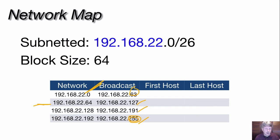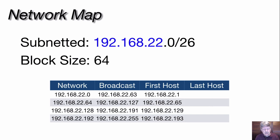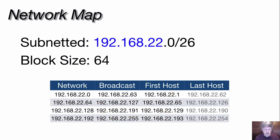Next we look at the first host address in each subnet — really easy. The first host address is the network address plus one. For the first subnet, the subnetted octet is zero, add one and it's one. We see that same relationship for each of the next three subnets. Then we find the last valid host address: it's one less than the broadcast. In the first subnet, broadcast is 63, subtract one gives 62. The same relationship holds all the way through.